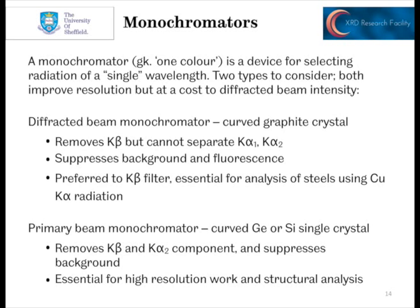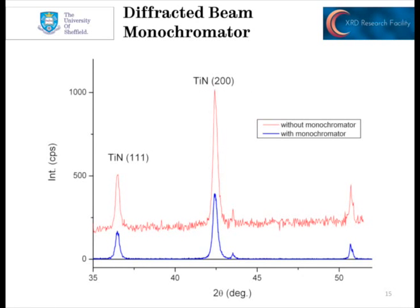We could also put the monochromator in front of the sample on the primary side. This would remove the K-Beta and the K-Alpha-2 radiation, giving quite a clean K-Alpha-1 beam hitting the sample, and it will suppress the background. But obviously if you have sample effects — like iron in the sample fluorescing with copper radiation — you would still see those effects. Machines like the Stoe instruments that have primary beam monochromators tend to be very good for high-resolution work rather than structural analysis. You can see the effect here using a titanium nitride sample with and without the diffracted beam monochromator. Without the monochromator, quite a noisy pattern — lots of features in the diffraction pattern are hiding in the background and it's not clear whether they're peaks.